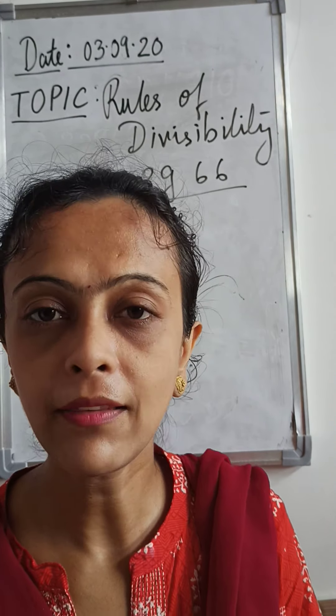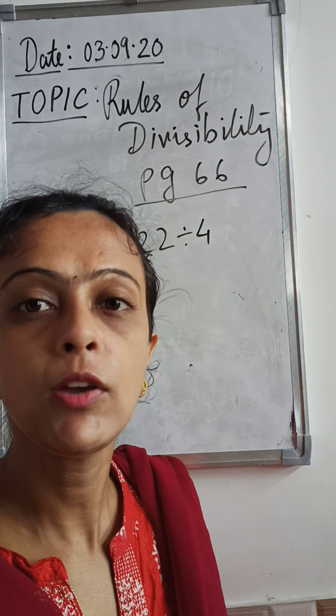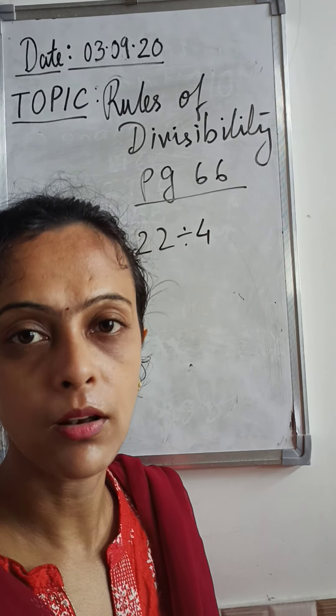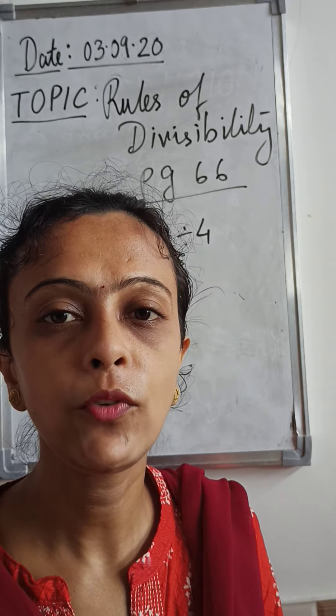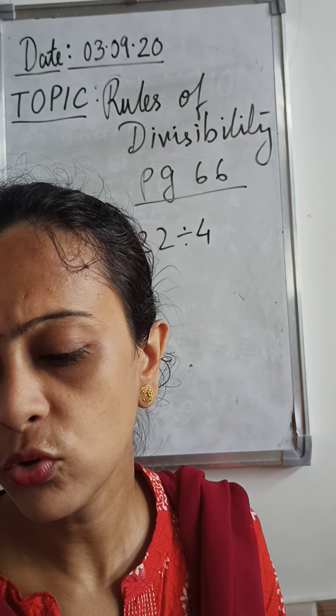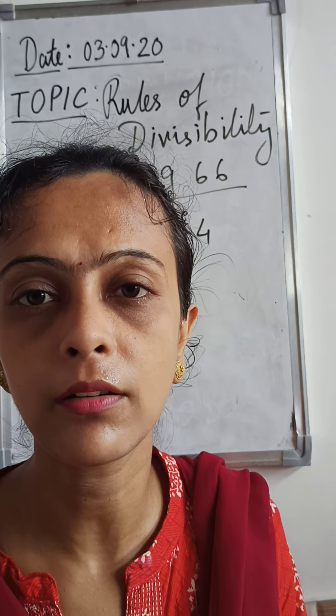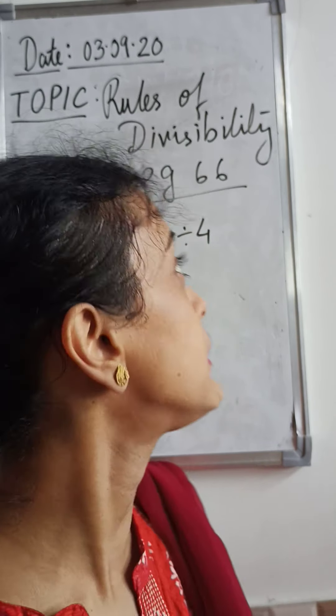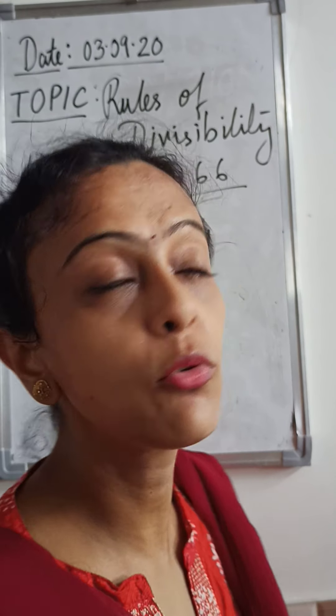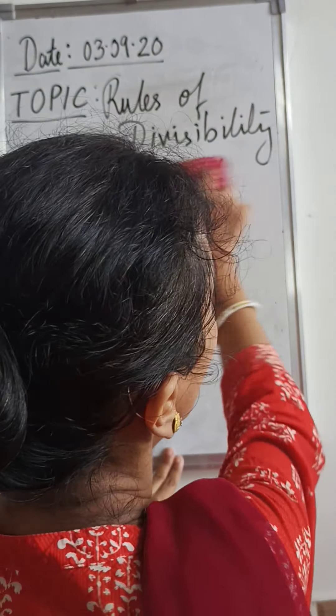Generally, when we want to know if 22 is divisible by 4, we divide the two numbers and check whether we get a remainder. If we get a remainder it's not divisible; if we don't, it is divisible. But for bigger numbers, dividing takes time. So to save time and reduce the burden, these rules of divisibility help us. They also help with the factors part of this lesson. See page number 66 and mark the rules in your books.